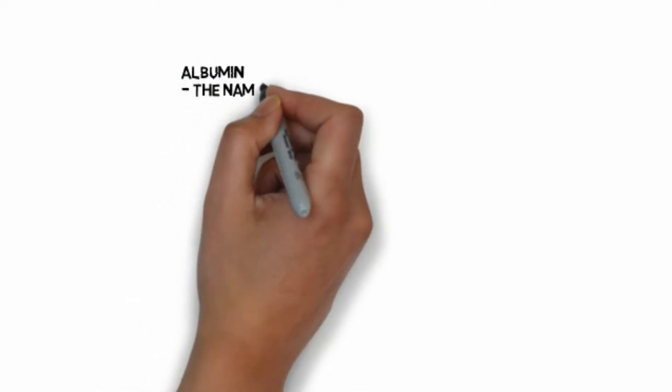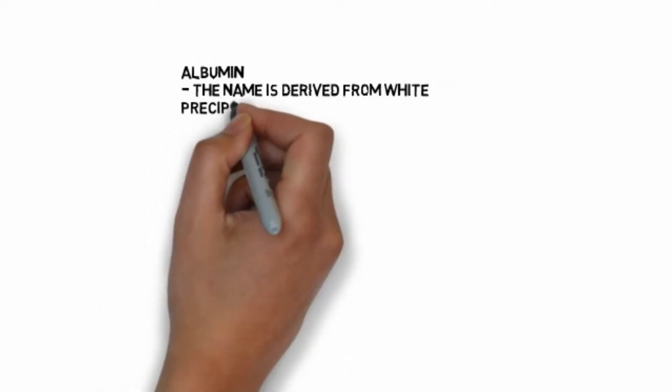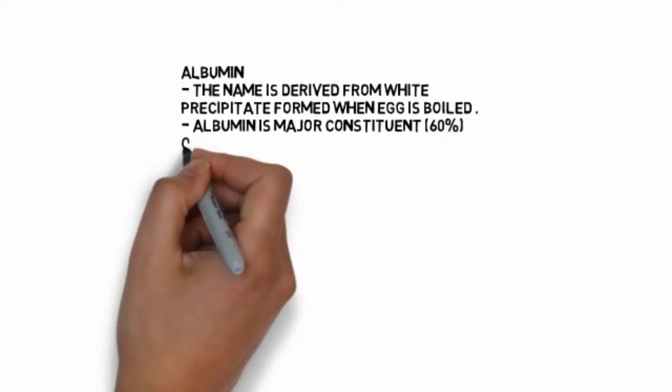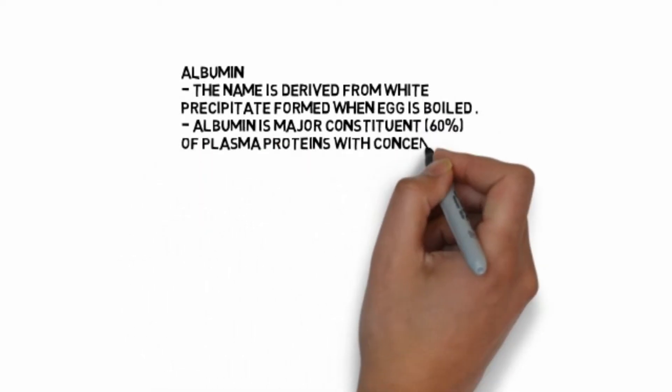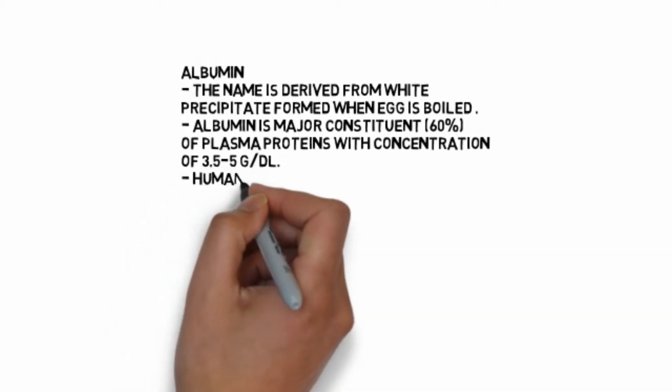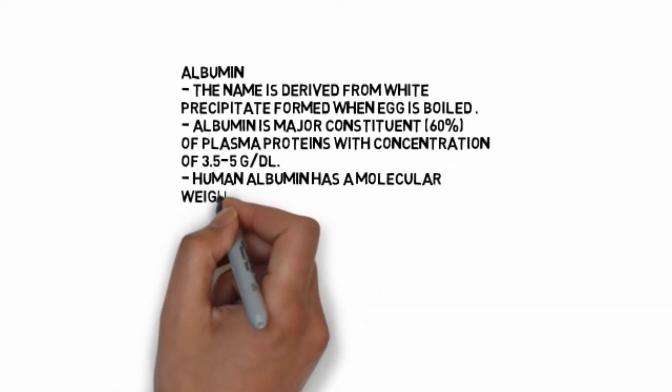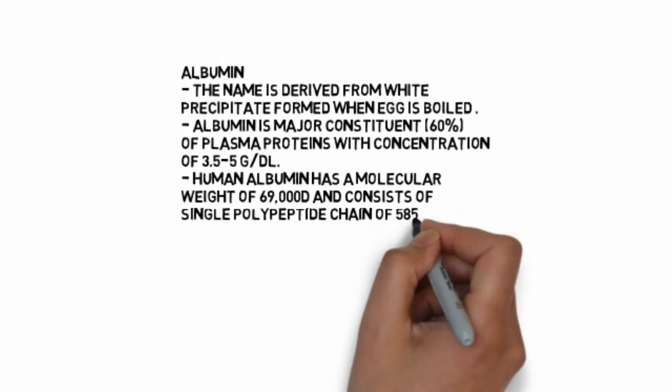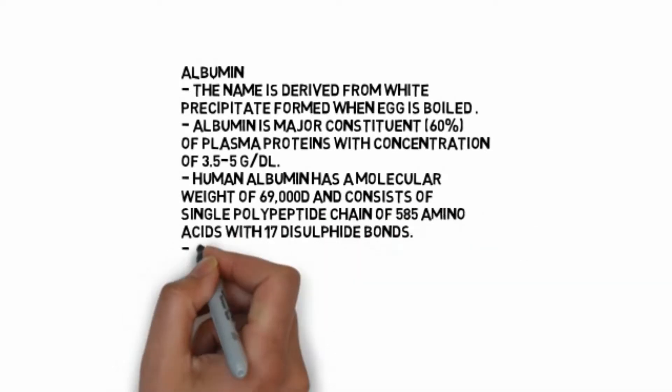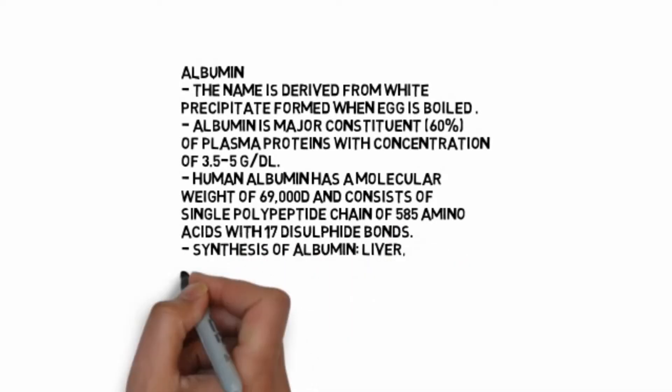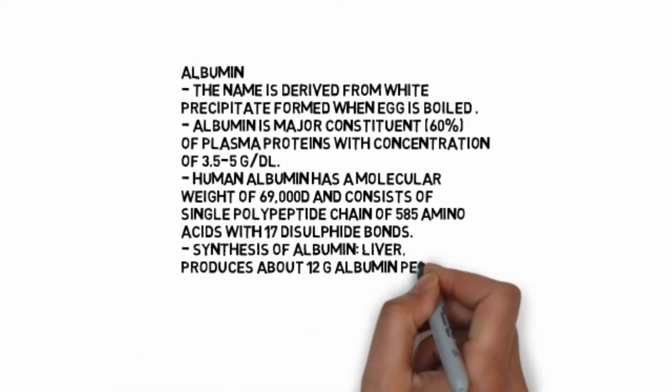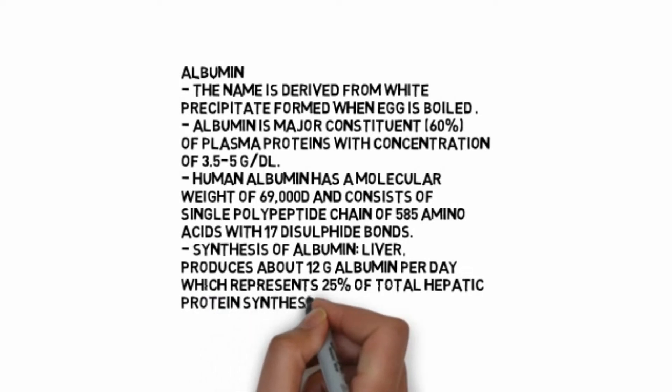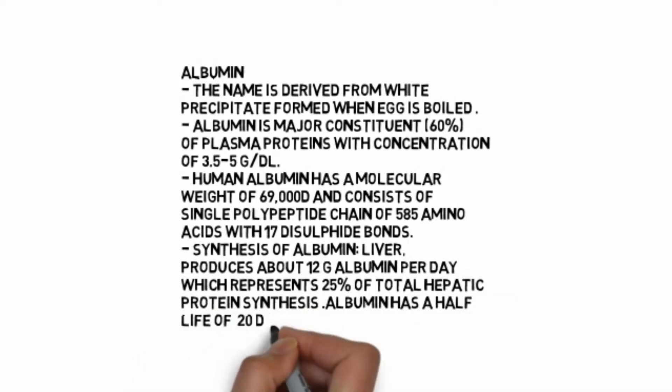Albumin: the name is derived from white precipitate formed when egg is boiled. Albumin is a major constituent, about 60 percent of plasma proteins, with concentration of 3.5 to 5 grams per deciliter. Human albumin has molecular weight of 69,000 daltons and consists of single polypeptide chain of 585 amino acids with 17 disulfide bonds. Albumin is synthesized in liver. Liver produces about 12 grams of albumin per day, representing 25 percent of total hepatic protein synthesis. Albumin has a half-life of 20 days.